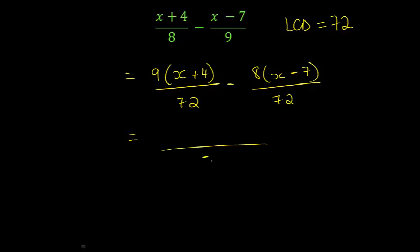So I'm going to write this now all over 72 as one fraction and I'm going to expand my brackets. So I've got 9x plus 9 times 4 is 36. Now I have to be careful here because when I multiply out this bracket, I need to make sure I'm multiplying by negative 8.